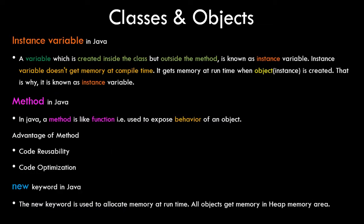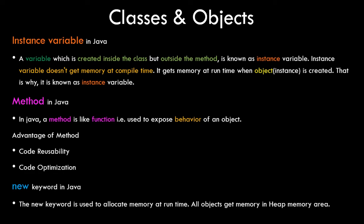Before we move to the programming part there are some things you need to understand. The first is instance variable in Java. A variable which is created inside the class but outside any method is known as an instance variable. It is called an instance variable because it does not get any memory allocation until runtime — during compile time that variable is not created in memory; it gets memory only at runtime when the object is created.